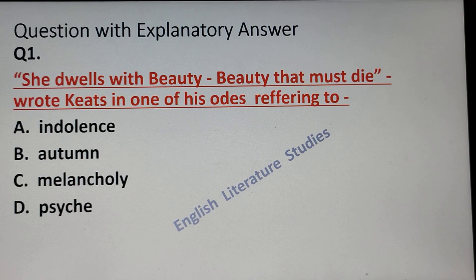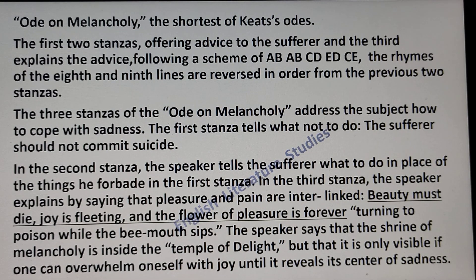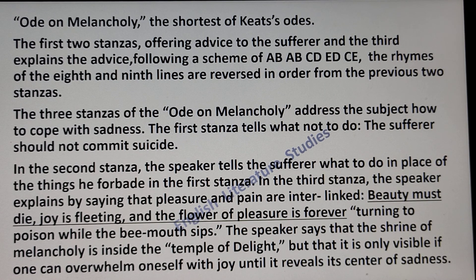My first question is: 'She dwells with Beauty — Beauty that must die' — written by Keats in one of his odes. The options are: Ode on Indolence, Ode to Autumn, Ode on Melancholy, or Ode to Psyche. My answer is Ode on Melancholy. It is the shortest of Keats' odes. The first two stanzas offer advice to the sufferer, and in the third he explains the advice, following a rhyme scheme of ABABCDEDCE.